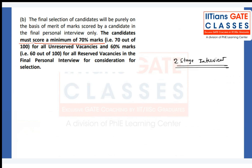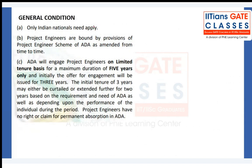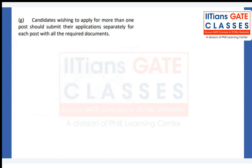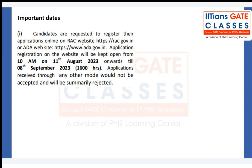In the final personal interview, candidates must score a minimum of 70% for unreserved category and 60% for EWS, OBC, and SC/ST categories. The final personal interview marks will be considered for final selection. ADA will engage Project Engineers on a limited tenure basis of five years - this is not a permanent post. However, the experience gained at ADA will be valuable for switching to other companies. If candidates wish to apply for more than one post, they must submit separate online application forms for each post.